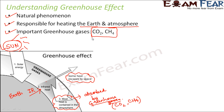An important thing to note is that abnormal concentrations of these gases can cause significant changes. If the concentration of carbon dioxide or methane increases too much, the greenhouse effect becomes very strong and the Earth's temperature increases too much, which is not good. On the other hand, if these greenhouse gases are absent entirely, the infrared radiation will not be absorbed and the Earth will be very cold. So these greenhouse gases must be present in the right amount to maintain the appropriate temperature.